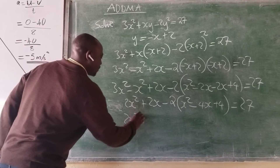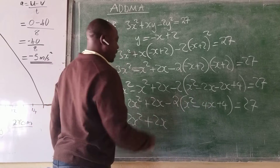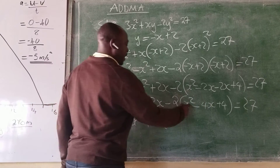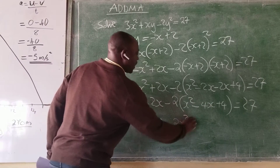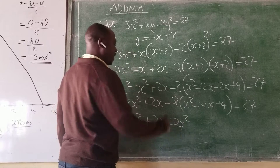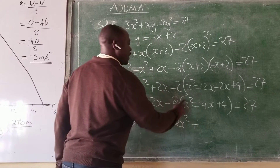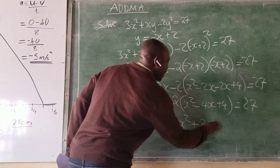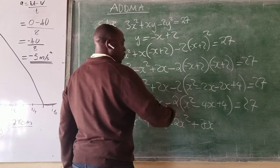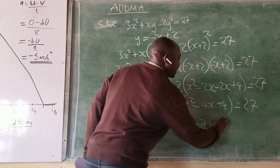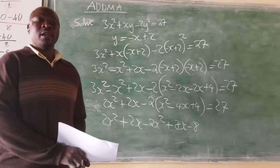So we have 2x squared plus 2x. We now expand the bracket: negative 2 times x squared gives us negative 2x squared, negative 2 times negative 4x gives us positive 8x, and negative 2 times 4 gives us negative 8. So this is what we get.